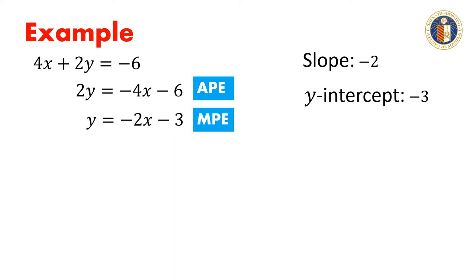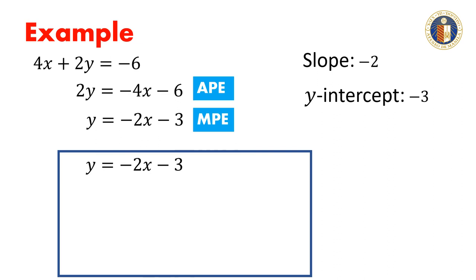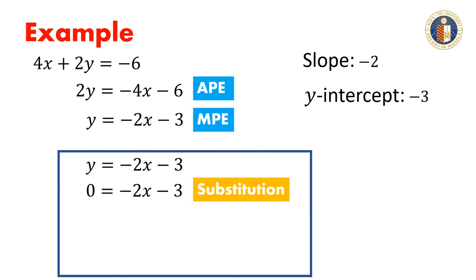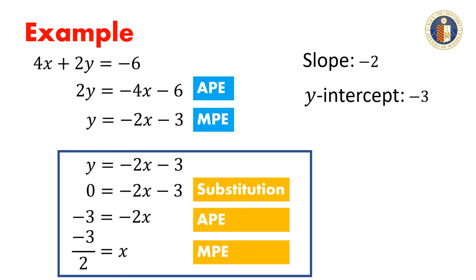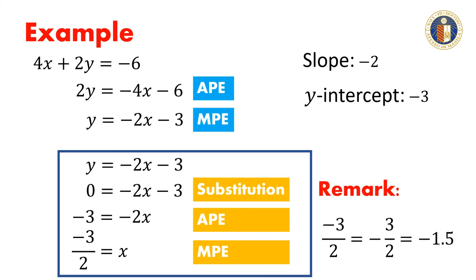To solve for the x-intercept, we substitute 0 for y. Notice that negative 3 over 2 is equivalent to negative 3 halves and it is also equivalent to negative 1.5. Therefore, the x-intercept is negative 1.5.